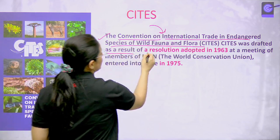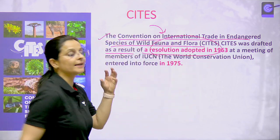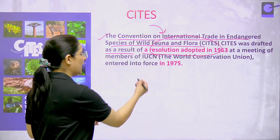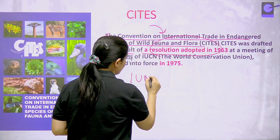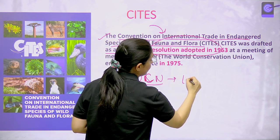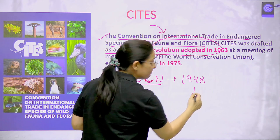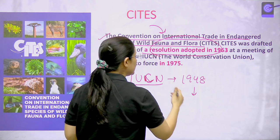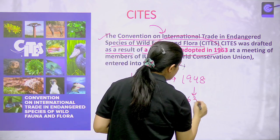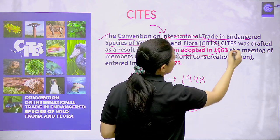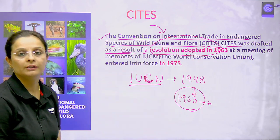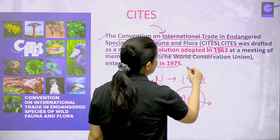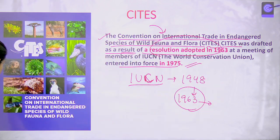CITES was drafted as a result of a resolution adopted by the members of IUCN. IUCN was established in 1948, and its members came together and agreed. In 1963, all IUCN members adopted this resolution regarding CITES, and the convention came into force in 1975.